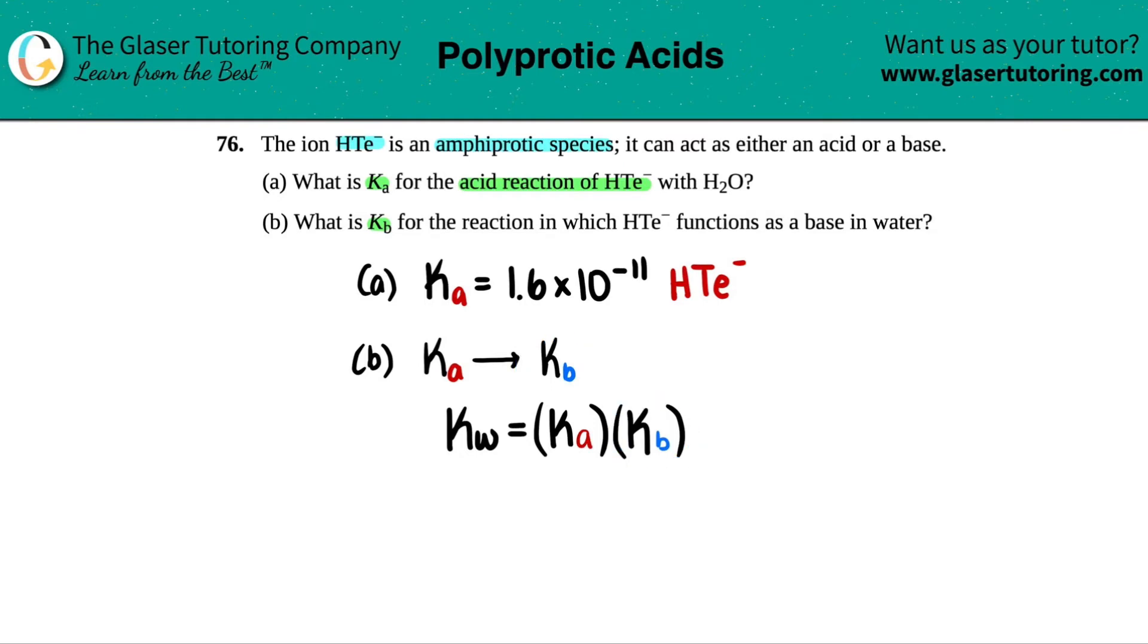So if I want to get KB by itself, all I would do is I would just divide by Ka on both sides. So just for simplicity of this video, I'm just going to do that. So I'm just going to say, okay, we're going to take the KW, divide by the Ka value. And because of that, we're going to equal out KB.